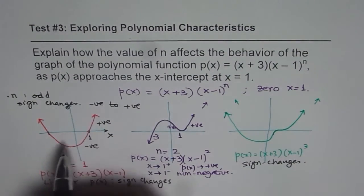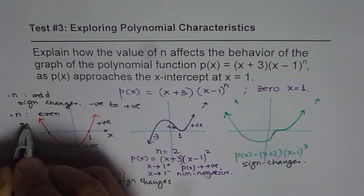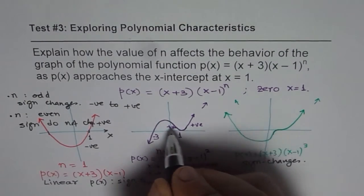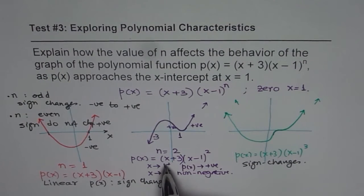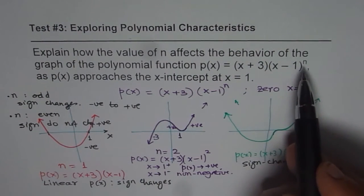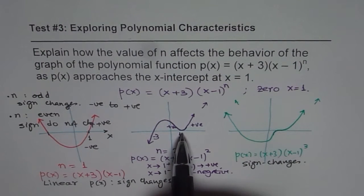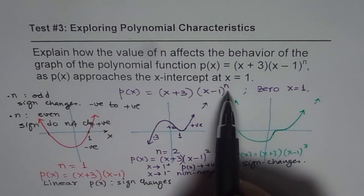Whenever you look at a graph, you read from left to right. If n is even, the sign does not change. As in the n equals 2 case, the polynomial remains non-negative — it becomes zero at the x-intercept, but on either side it is of the same sign. As the degree n gets higher and higher, the graph becomes flatter and flatter near the x-intercept, but this odd/even sign property holds.